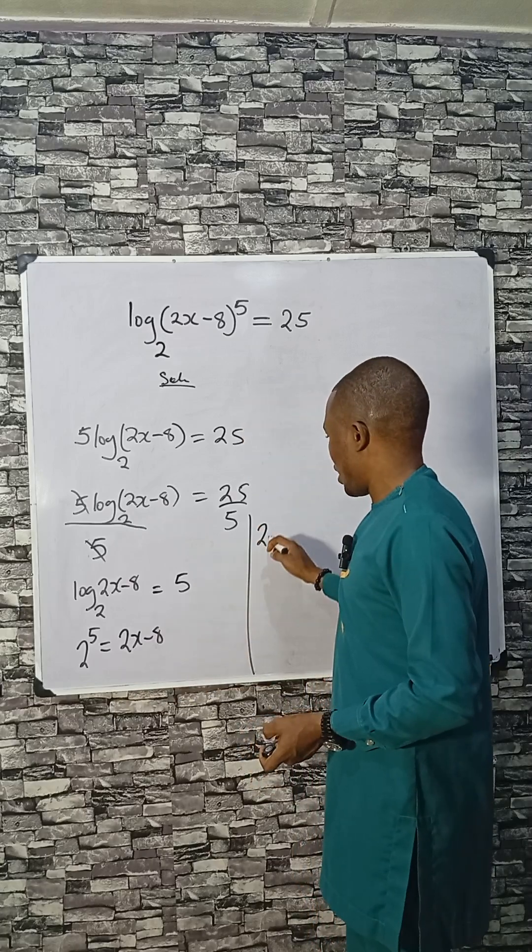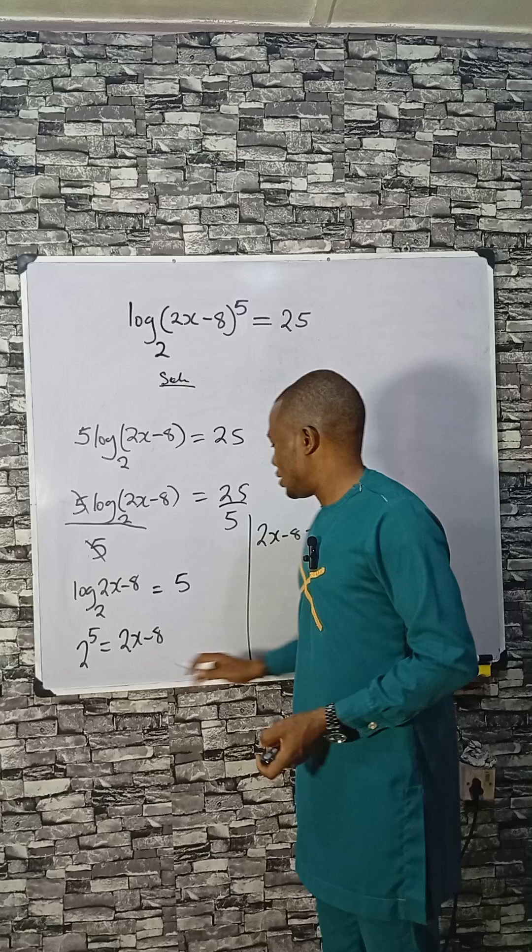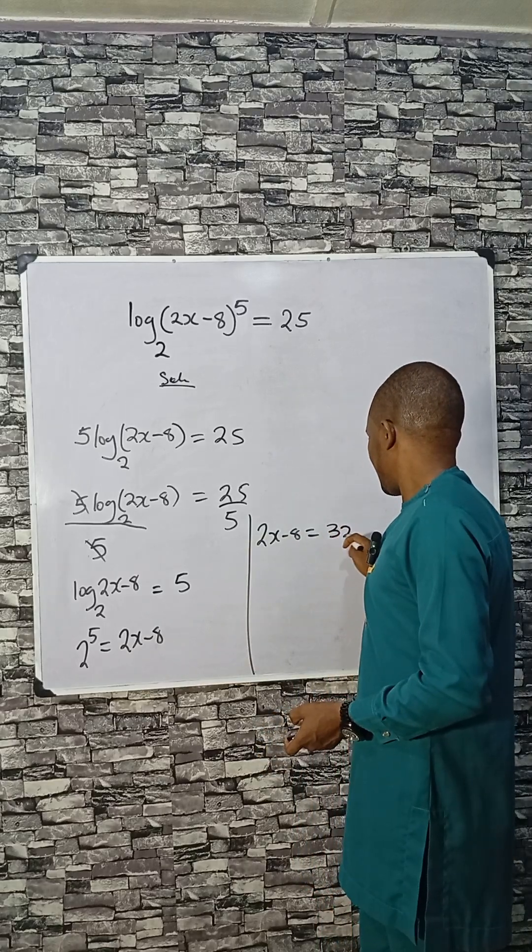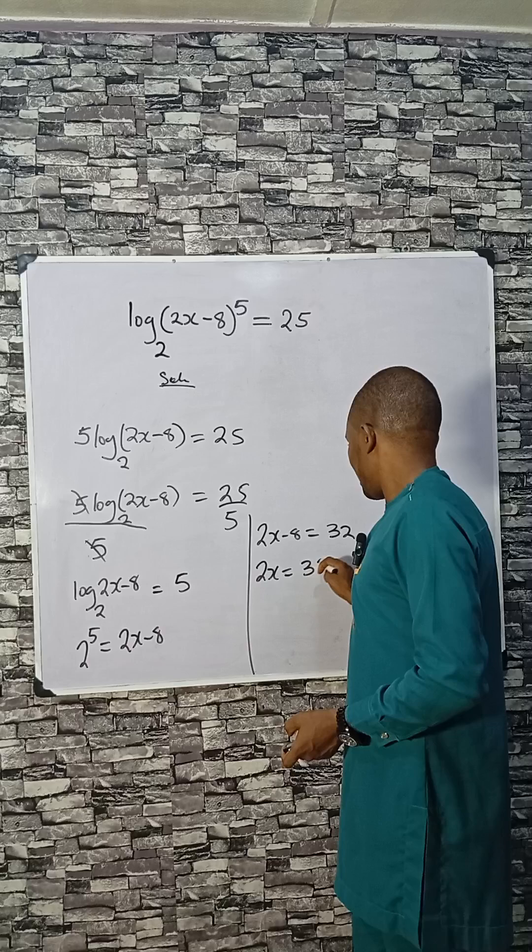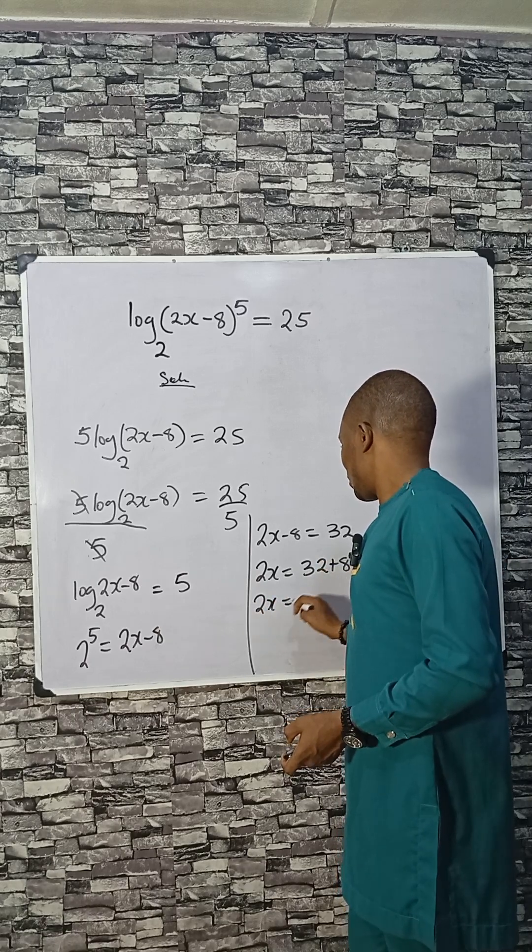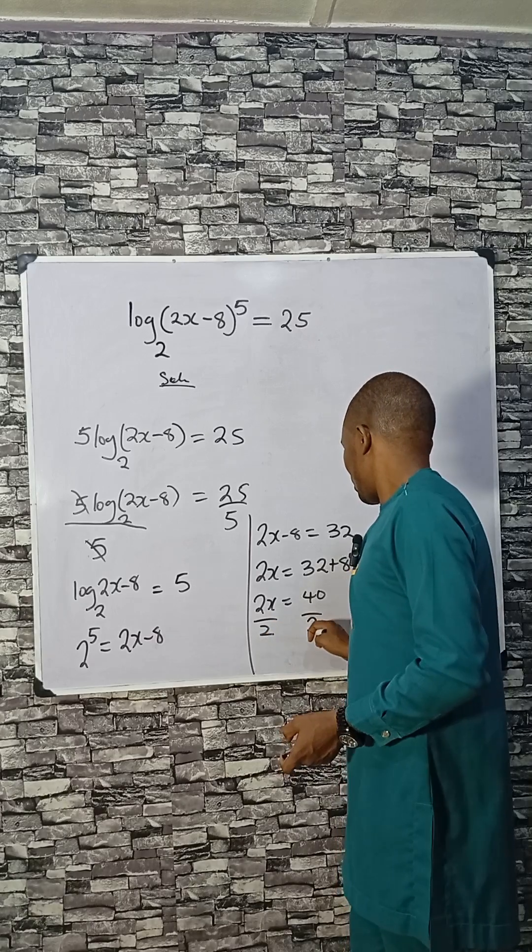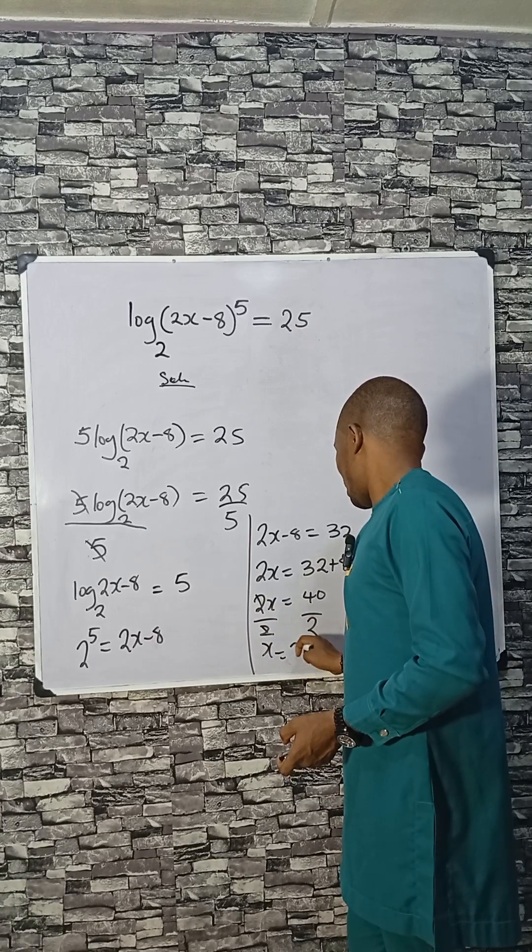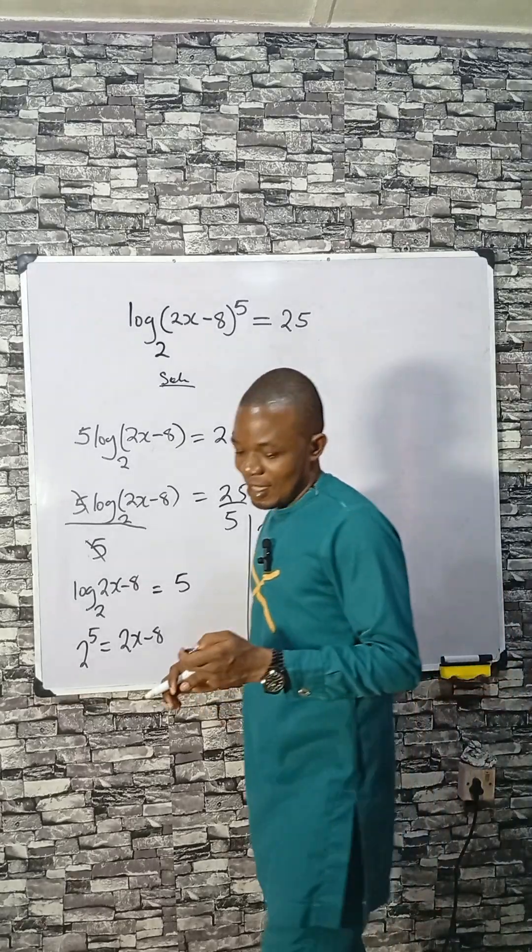2x minus 8 equals 2 raised to the power 5, which is 32. Making 2x the subject by adding 8 to both sides, 2x equals 40, and x equals 20. So 20 is the answer.